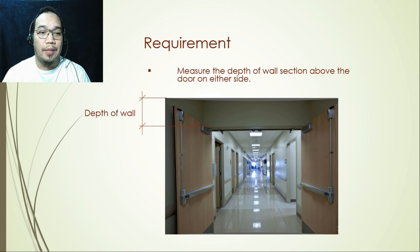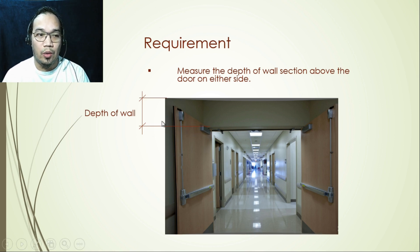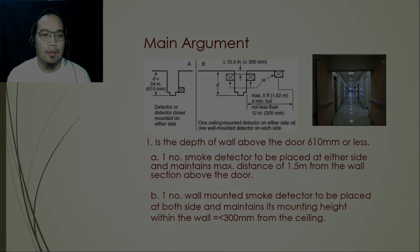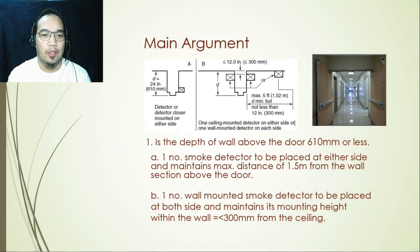The key requirement when providing a smoke detector designed to release a fire door is that you need to know the depth of the wall above the door. This is the part of the wall where we measure from the underside of the ceiling down to the bottom of the wall above the door. Once we have determined this depth, we can proceed with the placement rules.